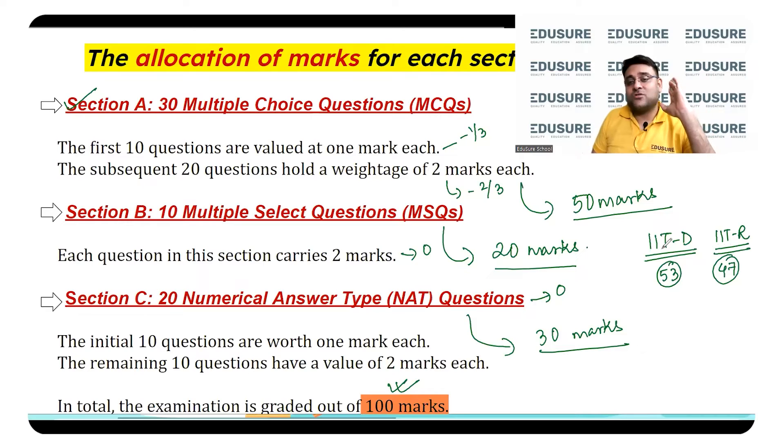This is the IIT Delhi safe score for the general category. In case the paper is standard, in case the paper is easier, obviously this cutoff will increase, and if the paper is more difficult, the cutoff will decrease. This does not mean that your aim for the examination should be 53. Your aim should not be 53, your aim should be 70. So your aim has to be around 70 marks for the IIT JAM to be able to do it confidently.